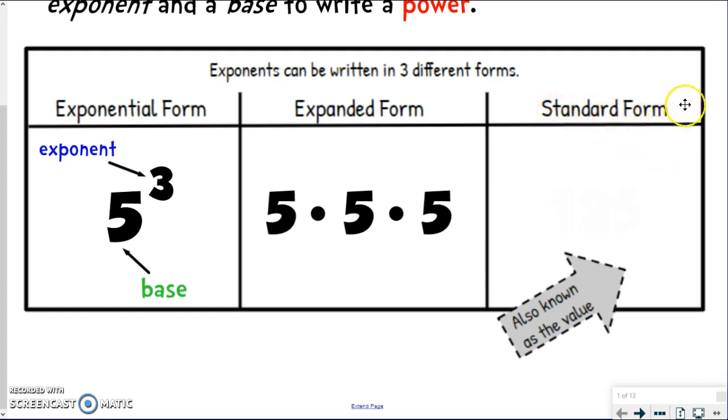Now standard form is like the actual answer we get. This is also called a value. So if I actually do 5 times 5, which is 25, and then times 5 again, I get 125. So it's like my answer. Standard form is the value of the exponent, and so that's like my answer. So I get 125.